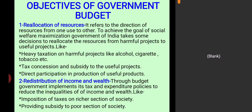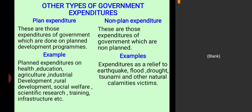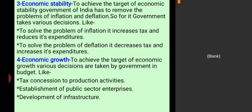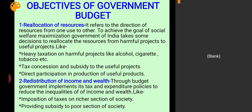So today's topic is the objectives of government budget. We are going to study why the government of India prepares and presents its budget every year — what are the objectives it wants to achieve. The main objectives are: reallocation of resources, redistribution of income and wealth, economic stability, economic growth, and management of public sector enterprises.